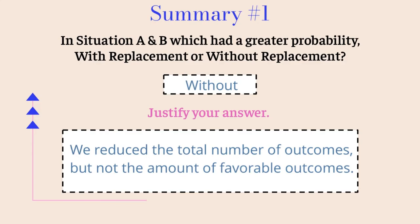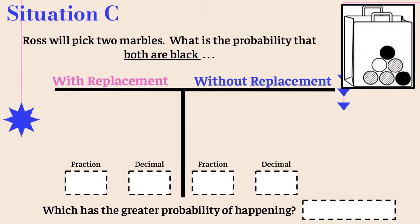Now let's see what happens when we remove some of our favorable outcomes in situations C and D. In situation C, Ross is going to pick two marbles. What is the probability that both are black? For with replacement, two out of six marbles are black. He puts it back, so we still have six marbles with two black. Two out of six times two out of six gives us one ninth.